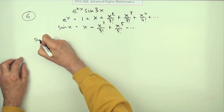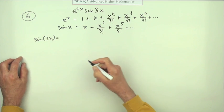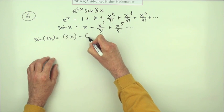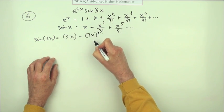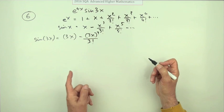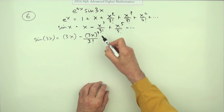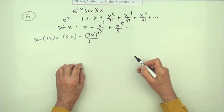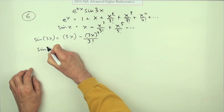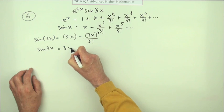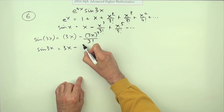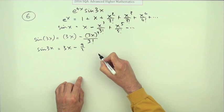For the first one: sine of 3x - we'll just put 3x into the expansion. So we get 3x minus 3x cubed over 3 factorial, and that's as far as we go because it only wants up to x cubed. So 4 sine 3x tidied up: 3x minus 3 to the power 3, but there's a 3 underneath, leaving 3 to the power 2, which is 9 upon 2, giving us 3x minus 9/2 x cubed.